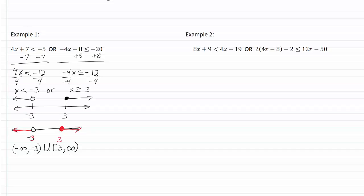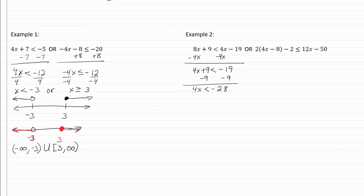Let's take a look at example two. I'm going to start on the right-hand side and add the opposite to my variable so I can get all variables on one side. I now have four x plus nine is less than negative nineteen. Add the opposite to my number and I have four x is less than negative twenty-eight. Divide by four on both sides and we get x is less than negative seven. Bring down the 'or.'